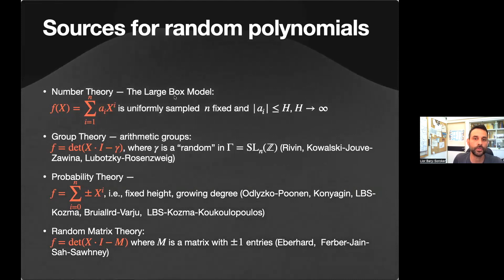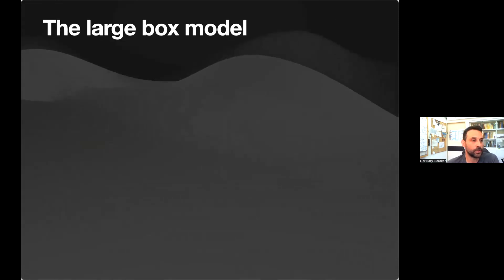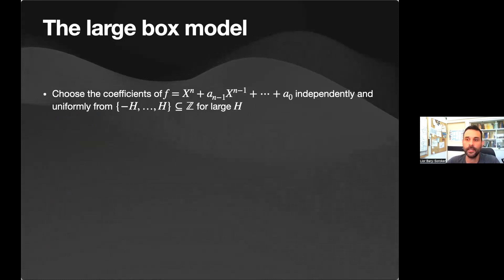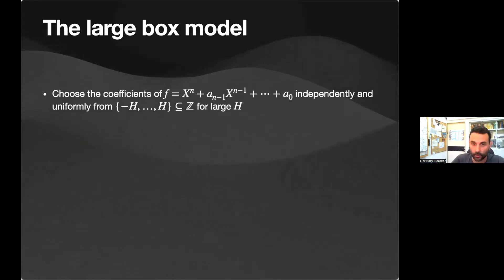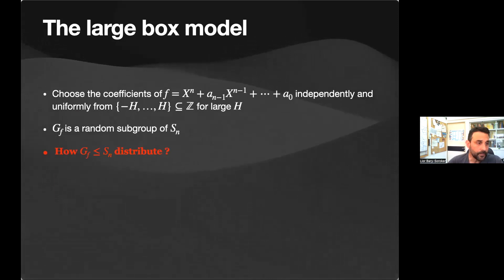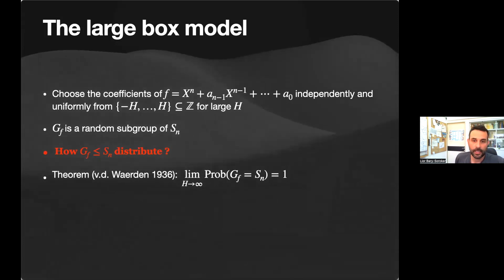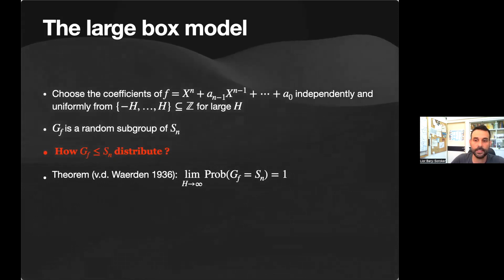In this talk I focus on the large box model and tell you what is known and what is not known. Since f is random, its Galois group G(f) is a random subgroup of Sₙ, and the big question is how G(f) distributes as a subgroup of Sₙ. A first theorem going back to van der Waerden — or maybe even to Hilbert — is that for most polynomials, with probability going to one, the Galois group is the full symmetric group Sₙ.